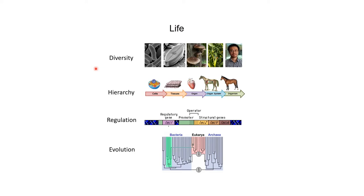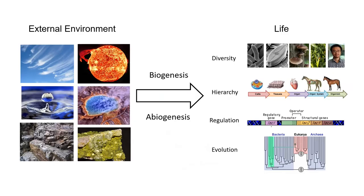We all know that life is a complicated phenomenon. It has high diversity, it is organized in specific hierarchies, it has delicate regulatory mechanisms, and it can evolve over time. But all of these seem absent from the relatively simple abiotic environment, which includes materials like air, water, and minerals, and energy sources that are solar, geothermal, and even radioactive.